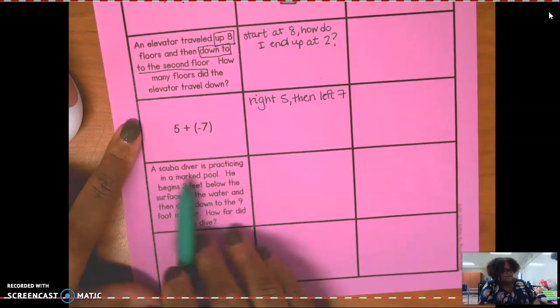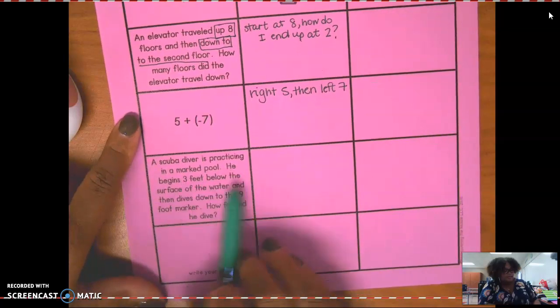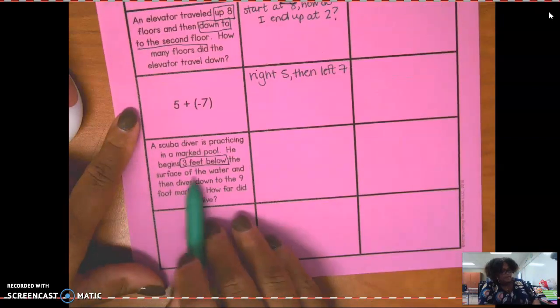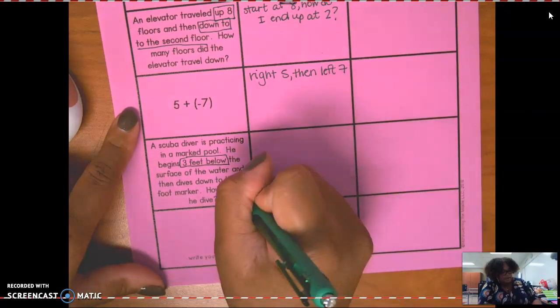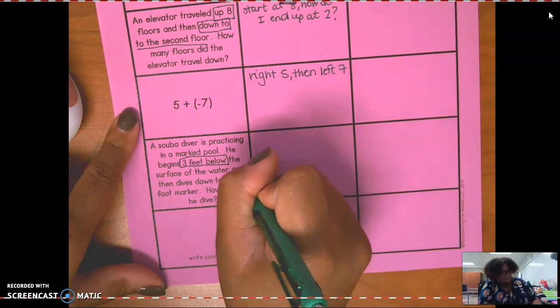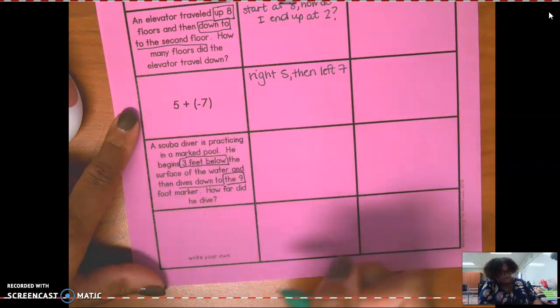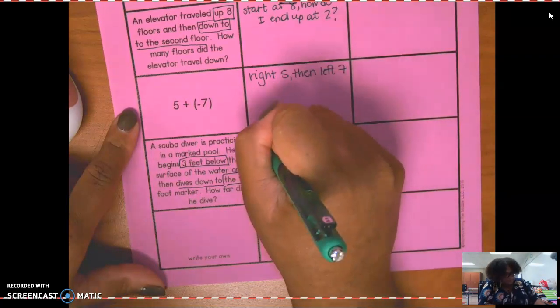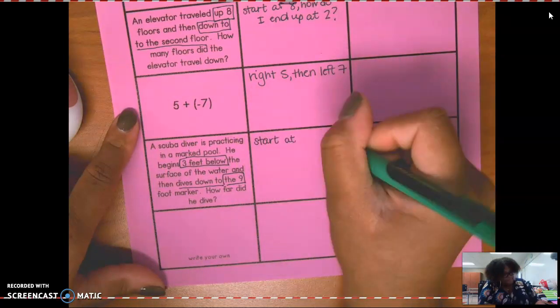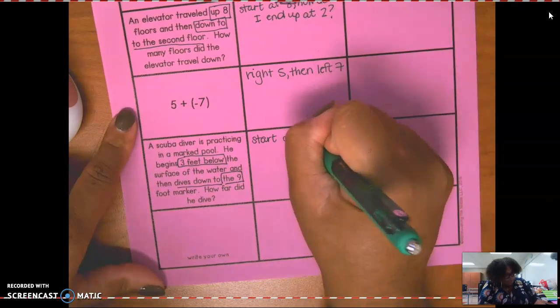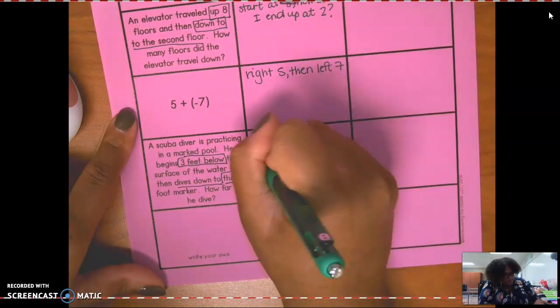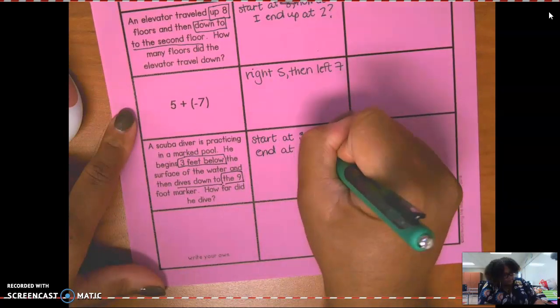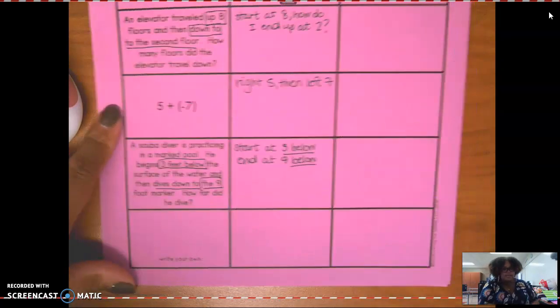A scuba diver is practicing in a marked pool. He begins three feet below the surface. Three feet below means something. Of the water. And then dives down to the nine foot marker. Down to the nine foot marker. How far did he dive? So we start at three below and end at nine below. Pay close attention to those.